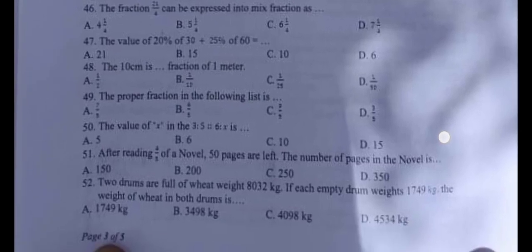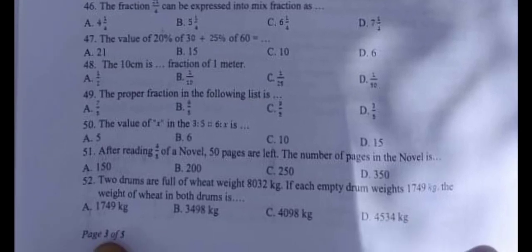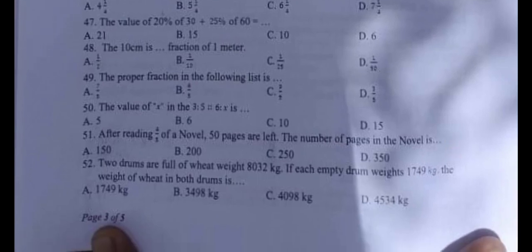Question number 50: The value of x in the 3 ratio 5 proportion 6 ratio x is A) 5, B) 6, C) 2, D) 10, D) 15. The correct answer is C, 10.